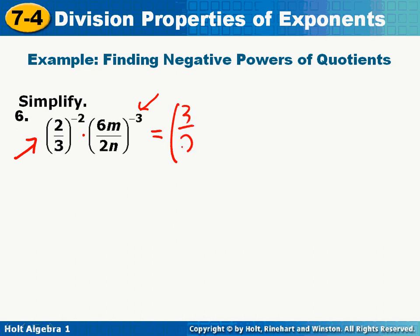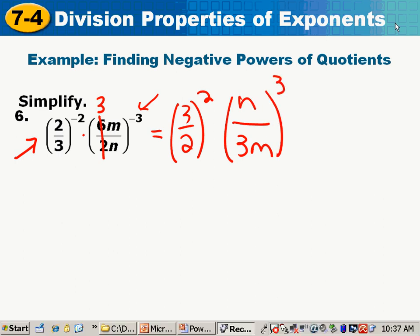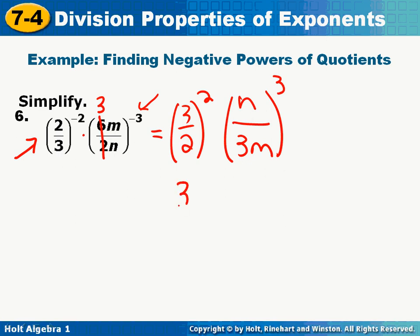So I'm going to flip it first, squared. I'm going to reduce this 2 and the 6, and that's a 3. Now I need to flip everything here, so the 3m goes on the bottom, the n goes on the top, and I change it to a cube. My next step is to square everything. So I'm going to do 3 squared over 2 squared, n cubed over 3 cubed, m cubed. Notice that I just write down the 2 squared and the 3 cubed.